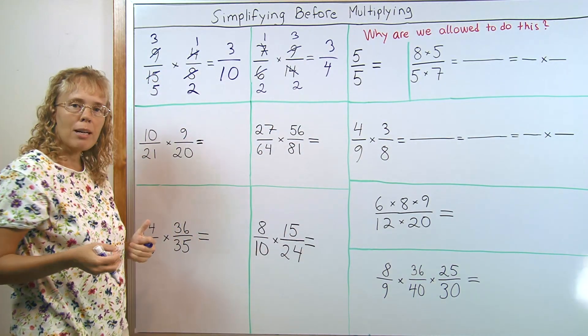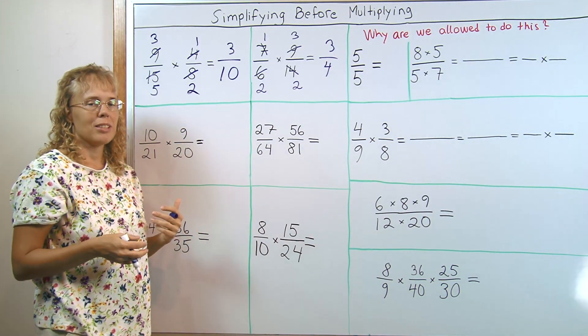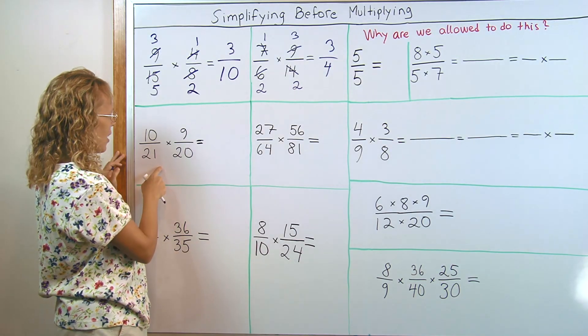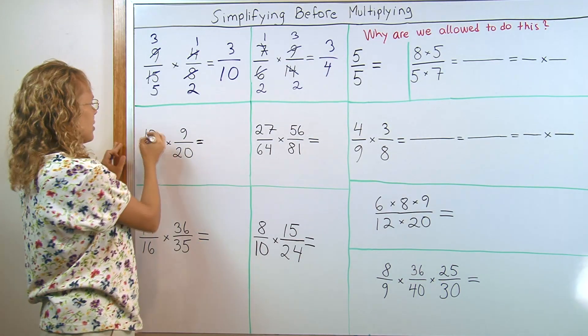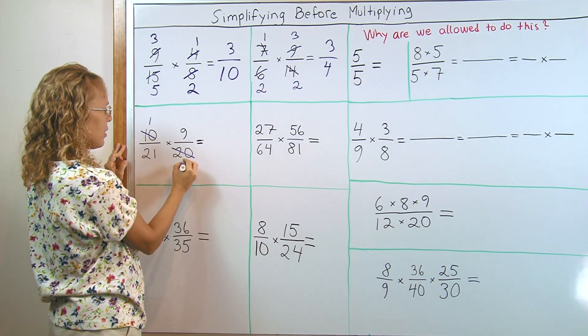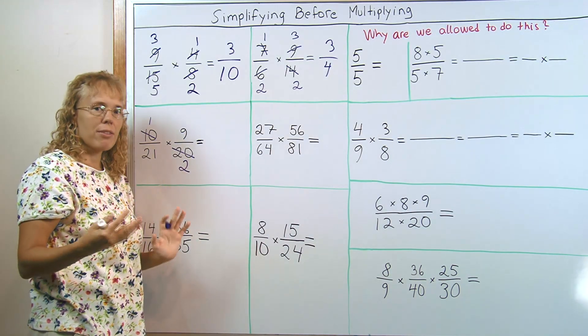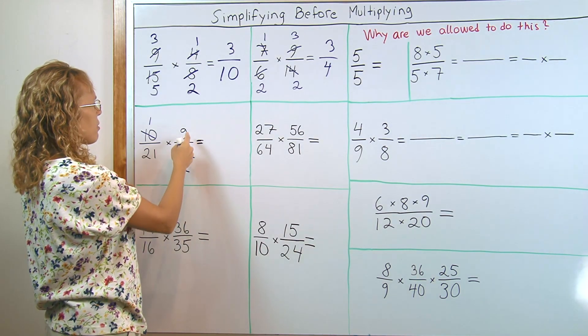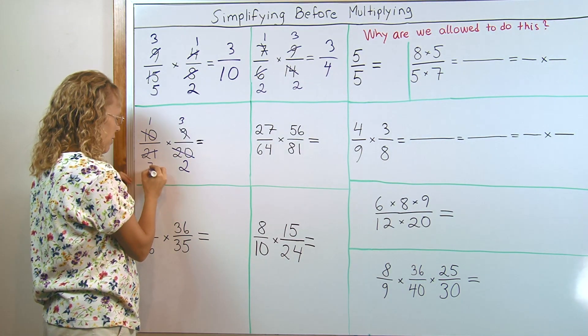Let's look at a few more examples and you can try to simplify them in your mind as I do them. And see if you get the same. Here I have, 10 and 20 are both divisible by 10. So I can simplify here and leave me 1 and 2. And then 9 and 21 are both divisible by 3. So I can divide by 3, 9 divided by 3 and then 21 divided by 3 is 7.